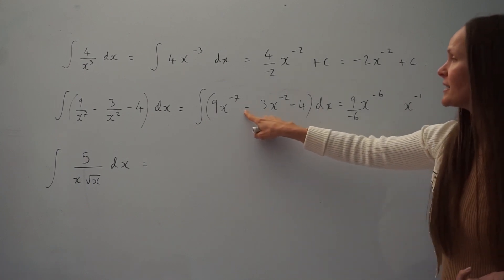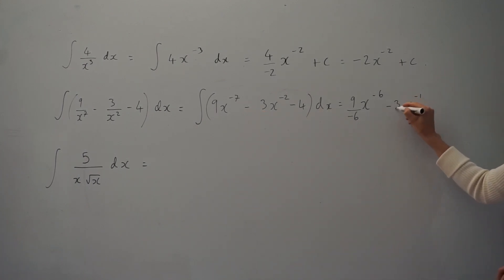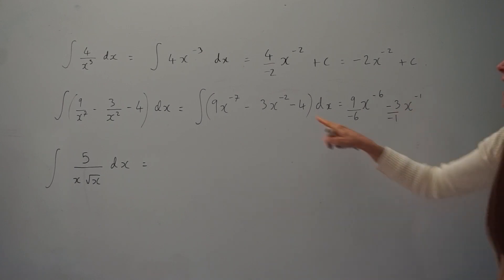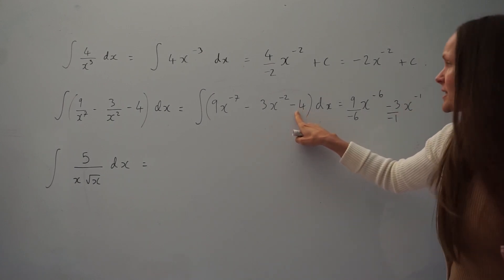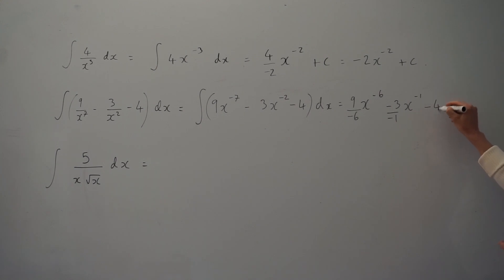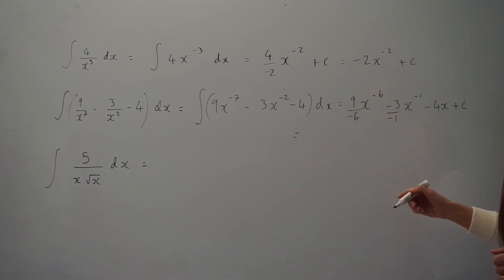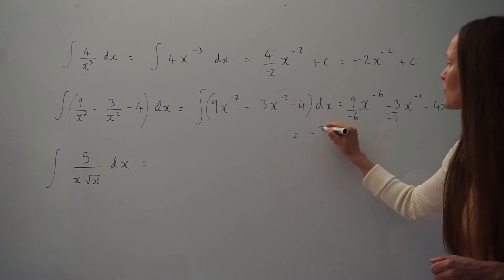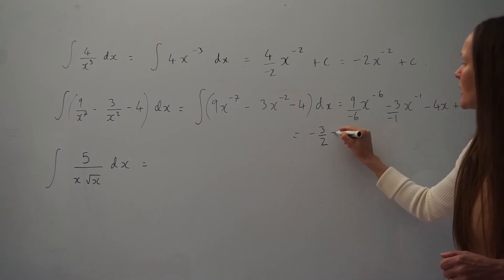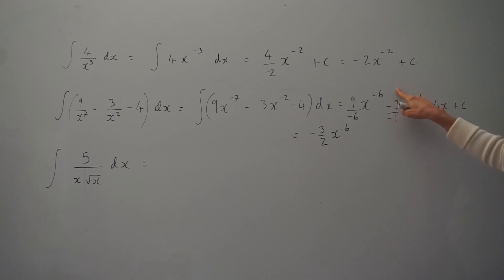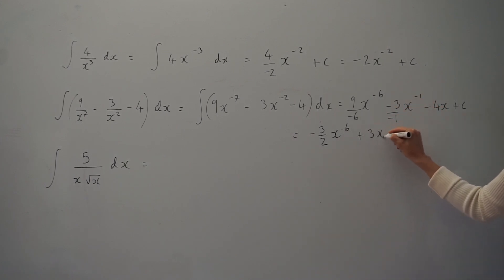We're dividing negative 3 by the new power, which is negative 1. And if you integrate negative 4, you just get negative 4x. Not forgetting to add c. Simplifying: 9 over negative 6 — dividing both by 3 gives negative 3 over 2, so negative 3/2 x to the negative 6. Then negative 3 divided by negative 1 gives positive 3, so 3x to the negative 1.